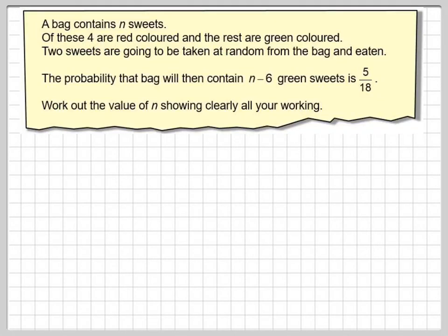A bag contains n sweets. Of these, four are red coloured and the rest are green coloured. Two sweets are going to be taken at random from the bag and eaten. The probability that the bag will then contain n minus 6 green sweets is 5/18. Work out the value of n, showing clearly all your working.